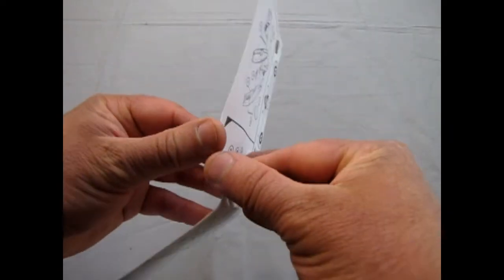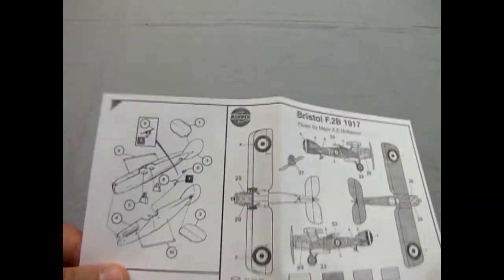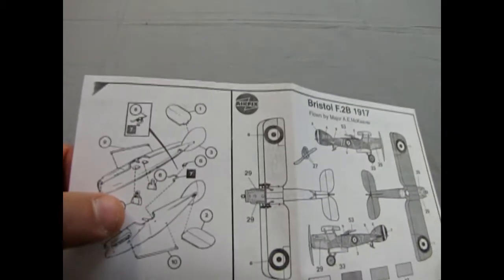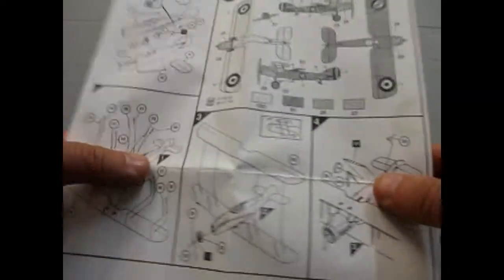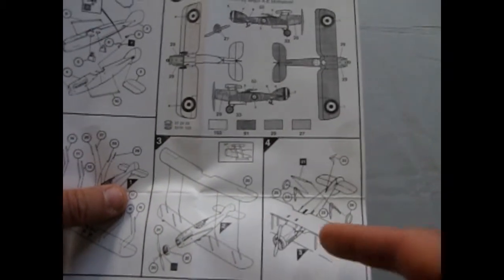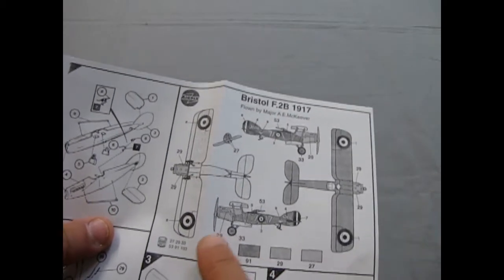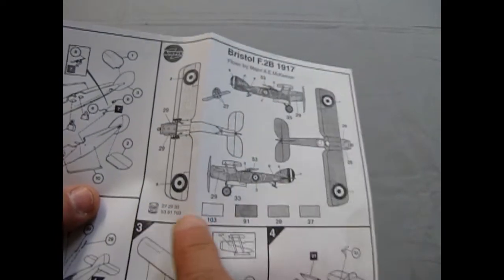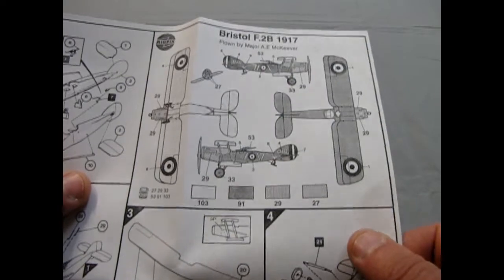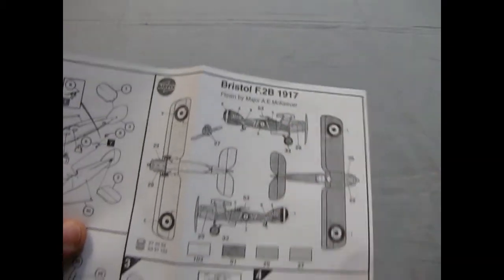And now here are the very simplistic instructions. You get two pilots in this one which is nice and there's all the going together. I built one of these when I was a kid and it is quite an easier model to build, partly due to the fact that it's larger. And here they give you the Humbrol paint color call outs, flown by Major A.E. McKeever.